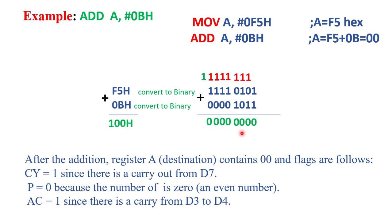After the addition, the accumulator register contains 00H, since after addition or subtraction the result is stored in the accumulator by default. Now, which flag bits are affected? First, the Carry Flag bit is set to 1 because there is a carry out from the D7 bit. After the addition there is a carry in the result, which is why the Carry Flag is set.